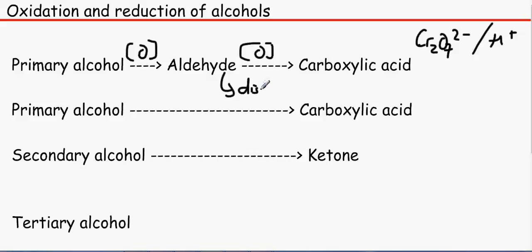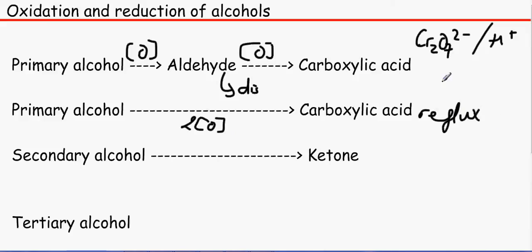The reason why we use a distillation apparatus is that as soon as we make an aldehyde we want it cooled off as soon as possible so it does not get oxidised into something we do not want. If we want to go from primary alcohol straight to a carboxylic acid, we can use a reflux apparatus. For secondary alcohols, that gets oxidised into a ketone. Tertiary alcohols don't get oxidised or reduced, by the way.